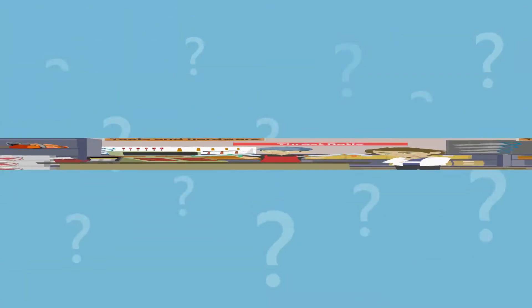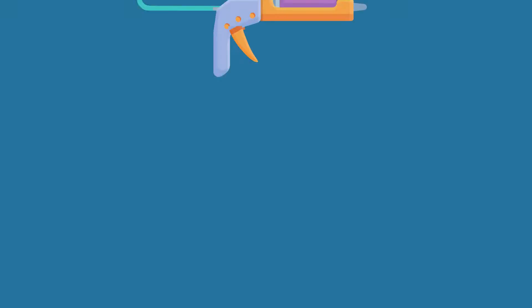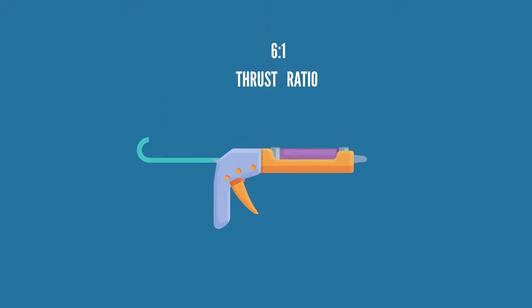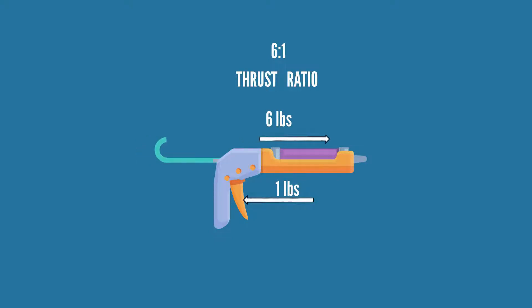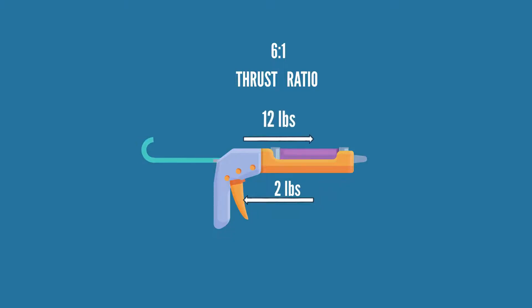But first, what exactly is thrust ratio? The thrust ratio is essentially the amount of power a caulk gun has in dispensing material. For example, a 6-to-1 thrust ratio means that for every one pound of force generated on the trigger, there are six pounds of force pushing to extrude the material. Furthermore, with the same 6-to-1 thrust, two pounds on the trigger yields 12 pounds extruding the material, and three pounds yields 18 pounds.